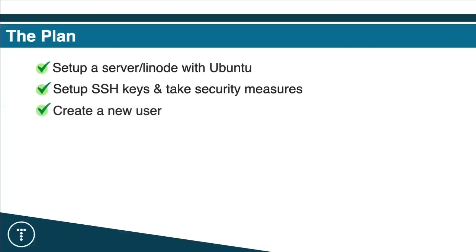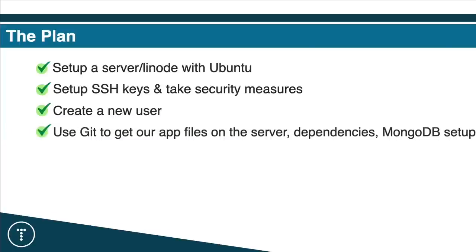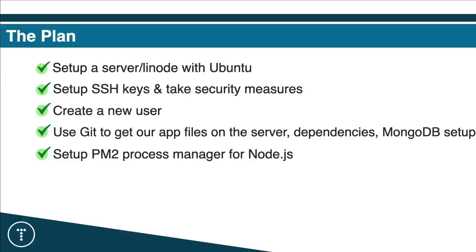We're going to create a new user because I don't want to use the root user. Then we'll get our app files onto the server using Git — the Goal Setter app from the MERN series I did about two months ago. We'll install dependencies, set up a MongoDB database in Atlas, and then set up the PM2 process manager to manage the running of the application on port 5000.